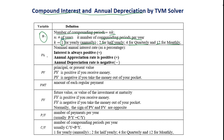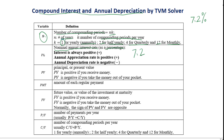I% stands for nominal annual interest rate. It will be given as a percentage. For example, when the interest rate is 7.2%, we will put 7.2 for I%.